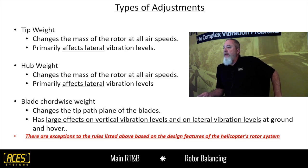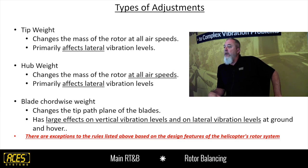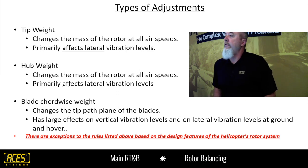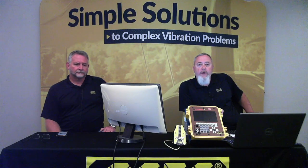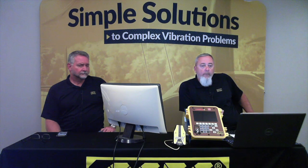Blade cord-wise weight changes the tip path plane of the blades and has large effects on both vertical and lateral vibration levels on the ground and in a hover. There are exceptions to pretty much every one of these rules — that's what keeps helicopters interesting. Make sure you check your manual; every helicopter is a little bit different and all the adjustments are a little bit different. The process to track and balance the aircraft may vary from aircraft to aircraft, so use that information along with our program to get the best results.